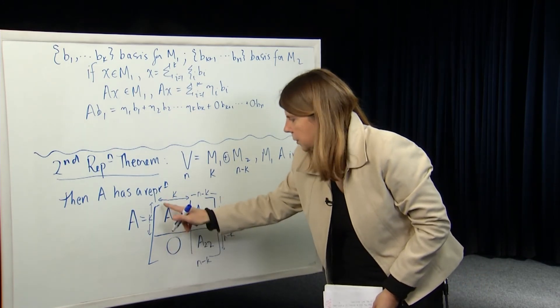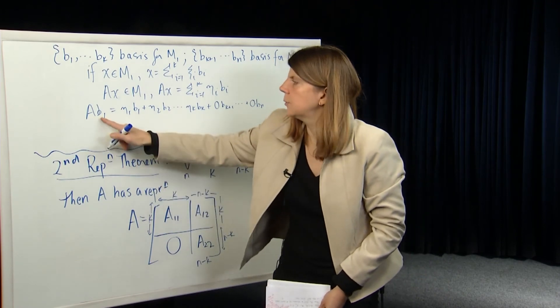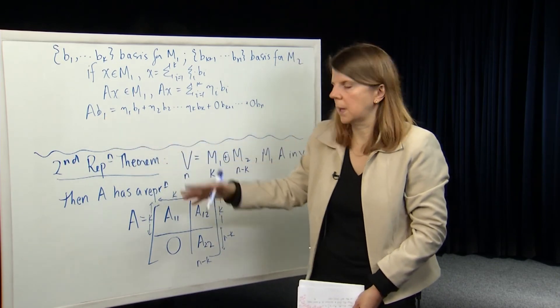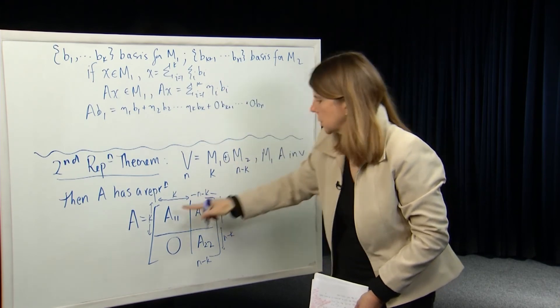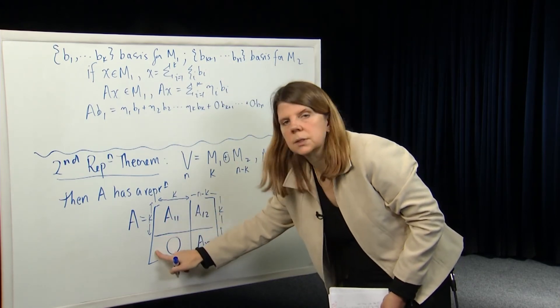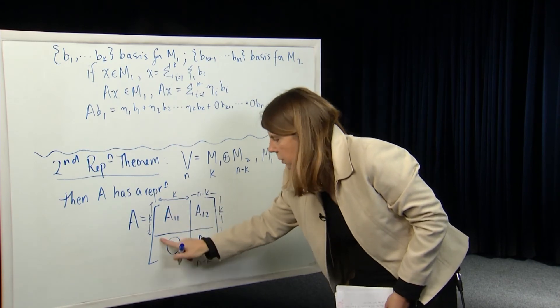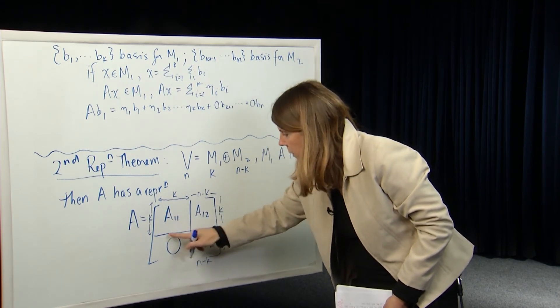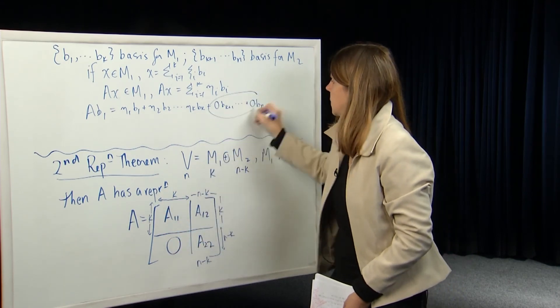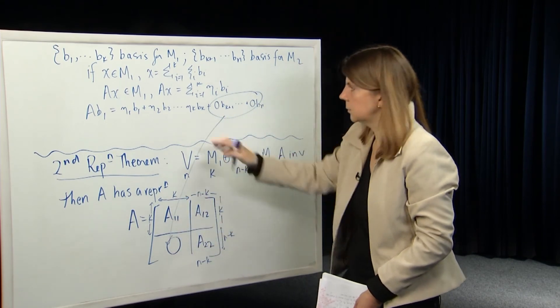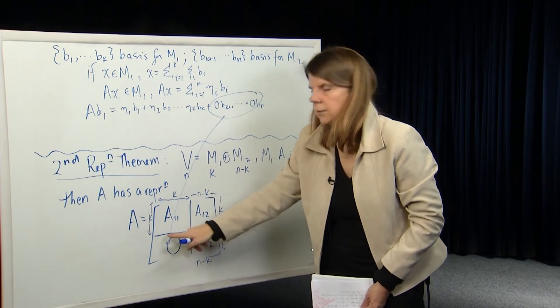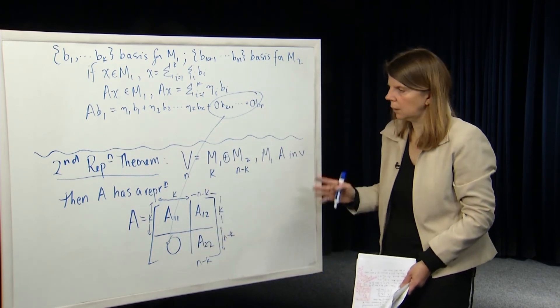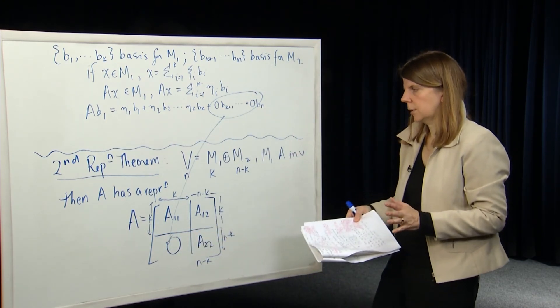And so if we think about the first representation theorem, the first column of the matrix A is A of B1 written with respect to the basis B1 up to BN. So these terms are going to be 0. That's the zeros here. AB2, these terms will be 0. So you end up with a 0 matrix here just because of those zeros there. And if you do that for all of the ABKs, that spans over the first K columns.